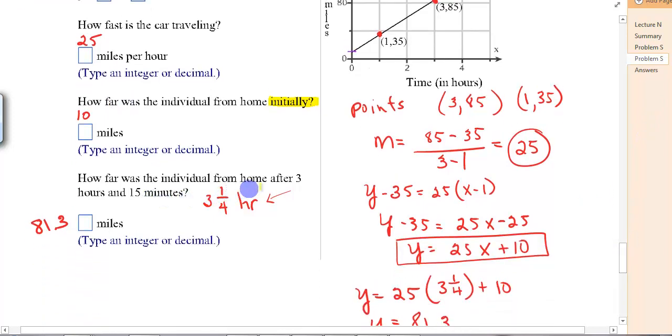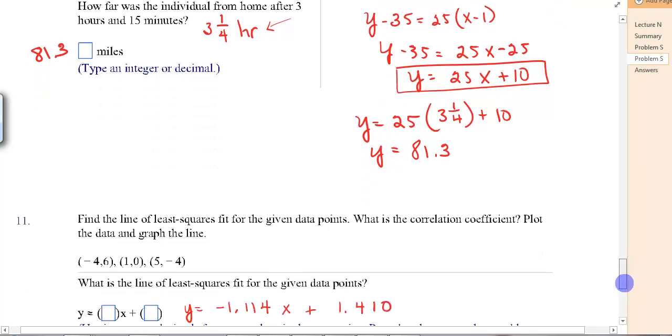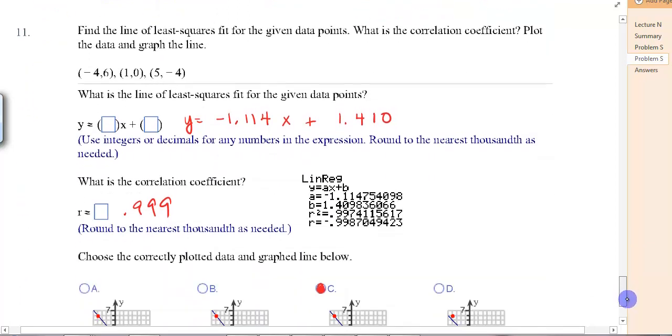How far was the individual from home after 3 hours and 15 minutes? 15 minutes is a quarter of an hour. So we're going to use 3 and 1 fourth because this is in hours. So you plug in 3 and 1 fourth, 4x, and solve that and you should get 81.3. It does say do an integer or a decimal, not fractions. So 81.3 goes there.